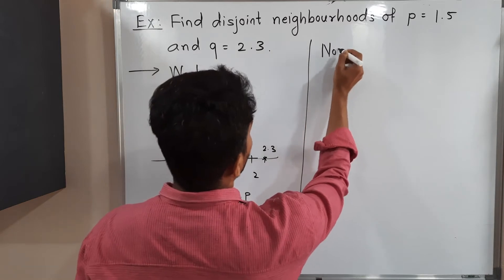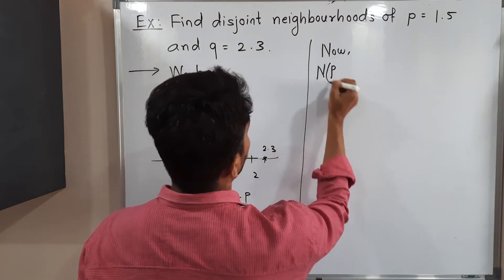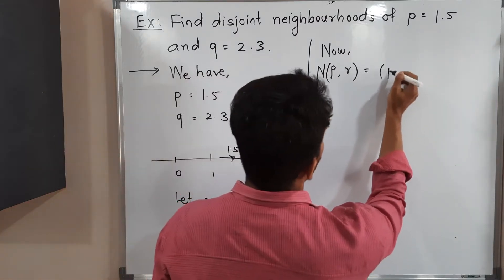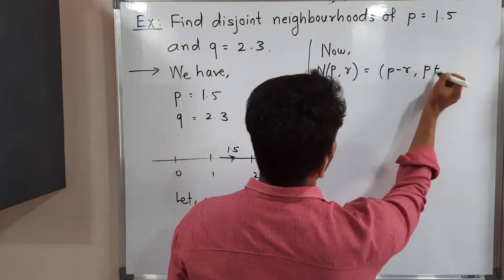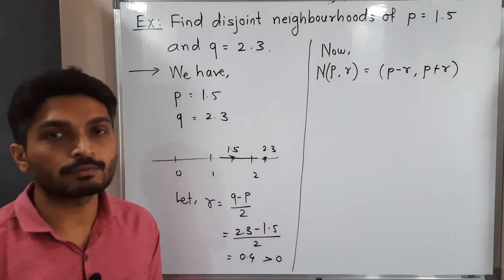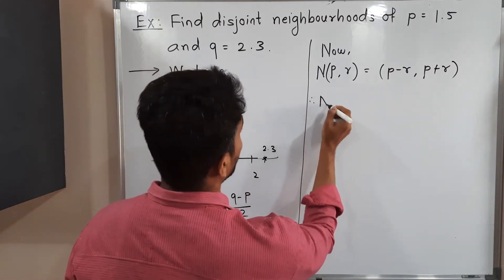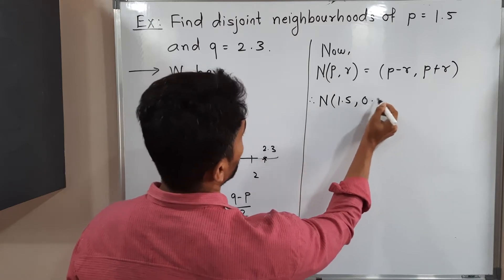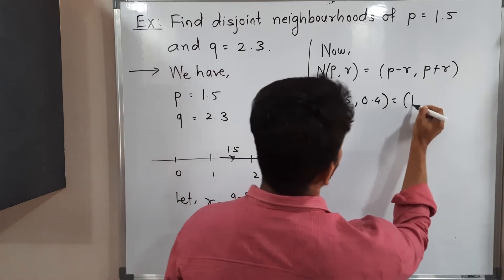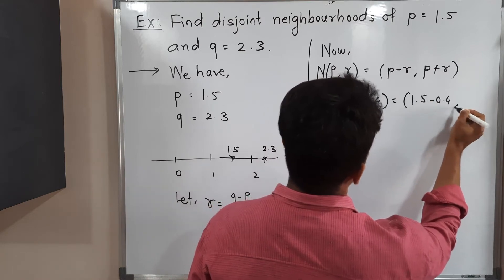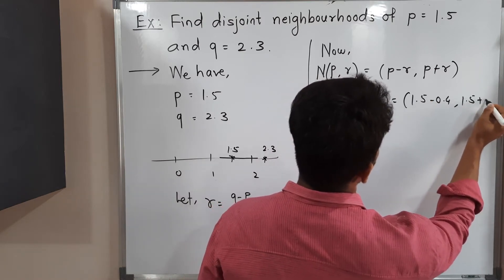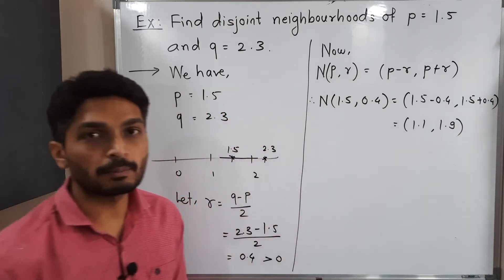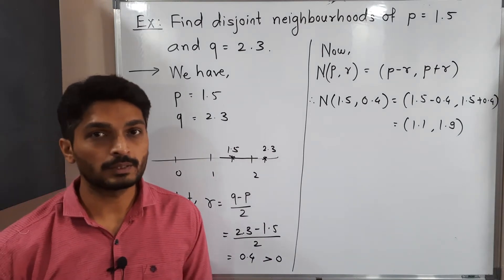Now, the neighborhood of P with radius R: by definition it is the open interval (P minus R, P plus R). Therefore, neighborhood of P = 1.5 with R = 0.4 is (1.5 minus 0.4, 1.5 plus 0.4) = (1.1, 1.9). This is the neighborhood of P with radius R.